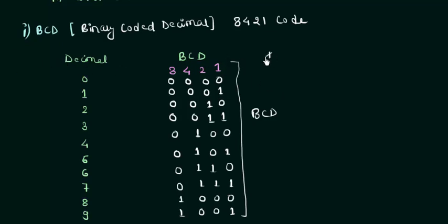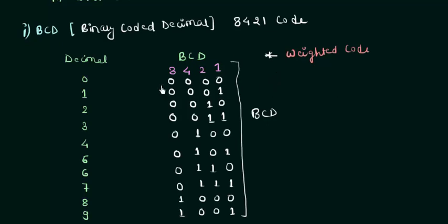Let us see some properties of this code. The first property is that it is a weighted code, because each bit position has a specific weight. In contrast, XS3 code and Gray code are unweighted codes — their positions do not carry weights. Another property is that it is also called the 8421 code, which I have already explained.